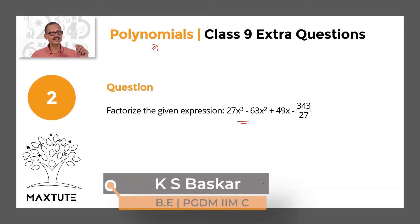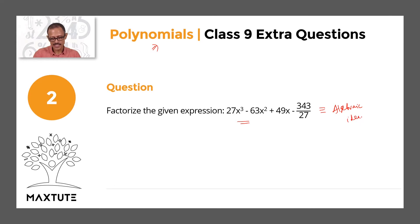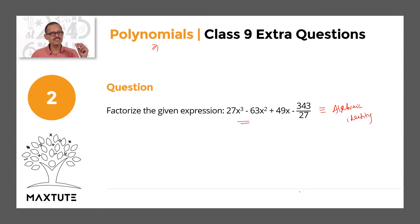Solving this question entails two steps. The first step, we're going to compare it with a standard algebraic identity. We'll check out which of the identities that you have learned — something like (a+b)², (a-b)³, a²-b², or (a+b+c)² — which one does it actually compare with. Once you've established that it compares with one of these, the expansions of one of these algebraic identities, saying that this is the equivalent of that algebraic identity is the factorization step.